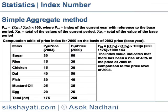Simple Aggregate method. Index for a given period is calculated by dividing the aggregate of different values of the specified period by the aggregate of values of the base period and multiplying the quotient by 100.